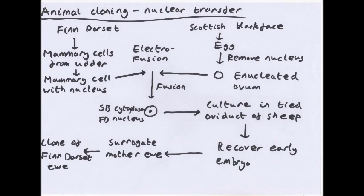The two cells are fused together using electrofusion, giving you the cytoplasm of the Scottish Blackface ewe and the nucleus of the Finn Dorset. This is cultured in the tied oviduct of another sheep. You get cell division and an early embryo. You then remove the early embryo and put it back into a surrogate Scottish Blackface ewe. The result is an identical clone of the animal that donated the nucleus — so the Finn Dorset will be an exact genetic copy.